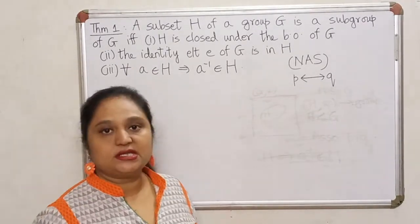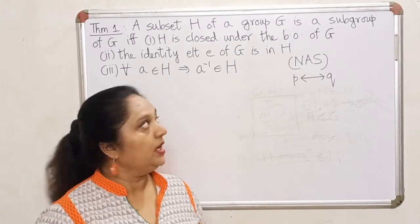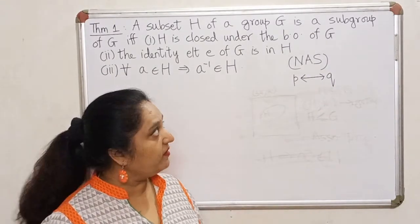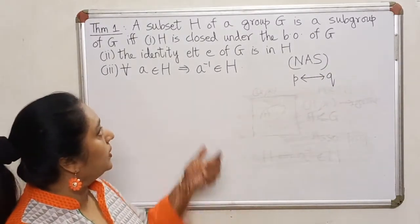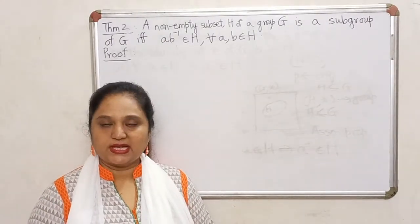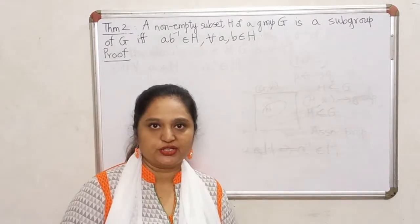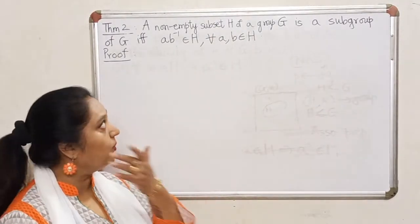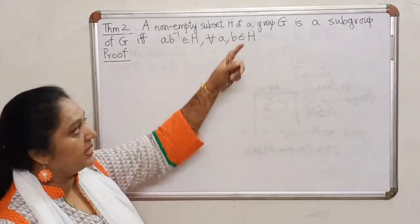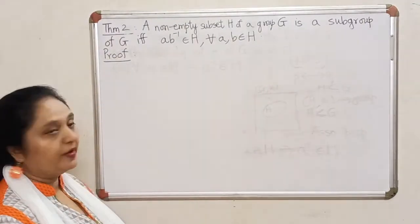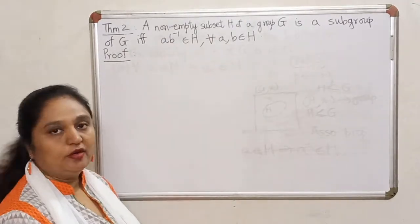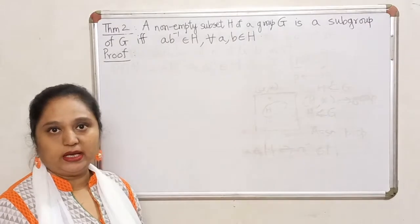This theorem still involves verifying three properties: closure, identity, and inverse. In the next theorem, we will see how to reduce the number of conditions even further. This is our second necessary and sufficient condition for a subset to be a subgroup. The theorem states: a non-empty subset H of a group G is a subgroup of G if and only if a times b inverse belongs to H for all elements a and b in H.